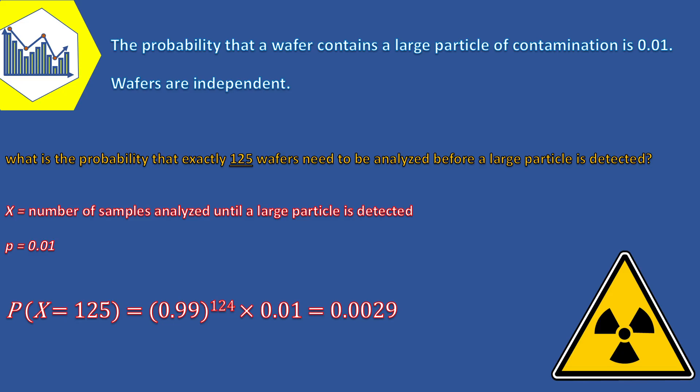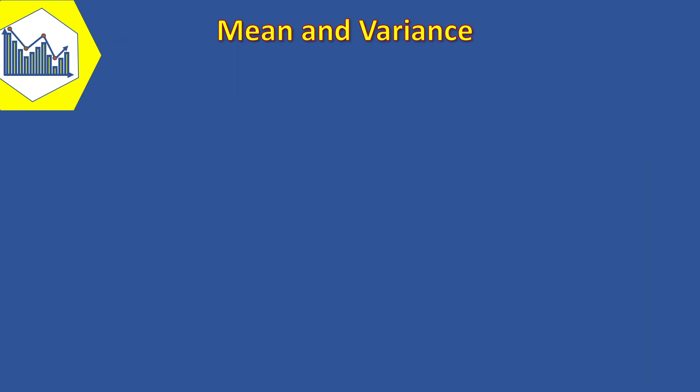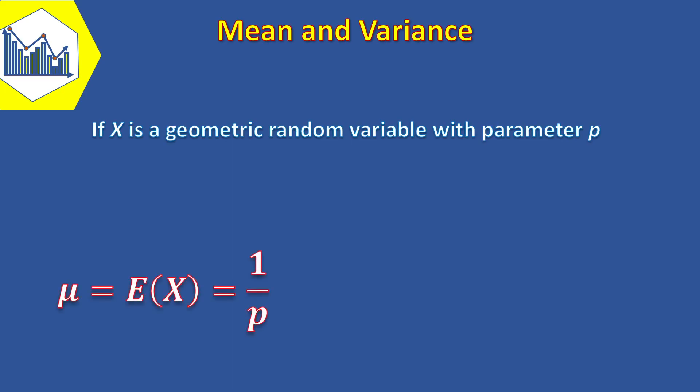Now it's time to see what the mean and the variance of this distribution are. If X is a geometric random variable with parameter p, the expected value of X equals 1 over p and the variance equals (1 minus p) over p squared.